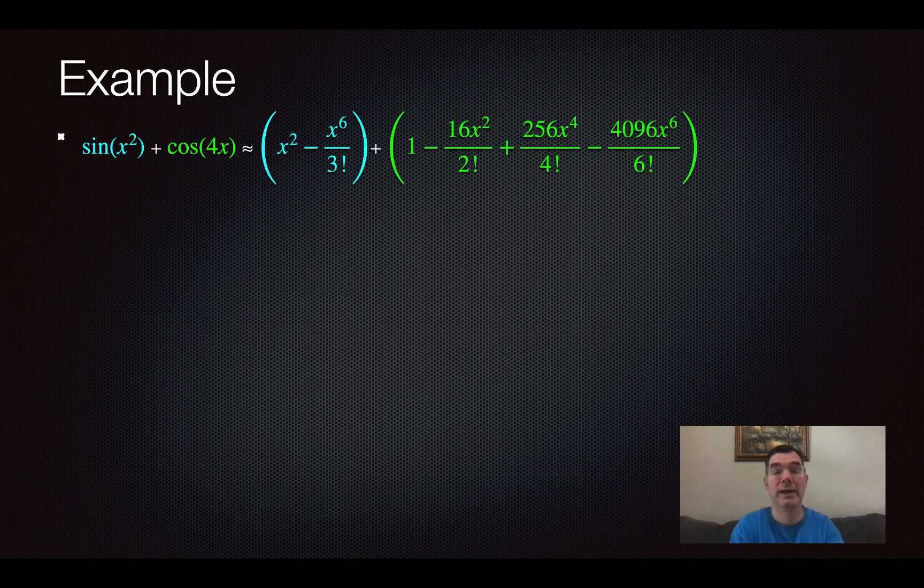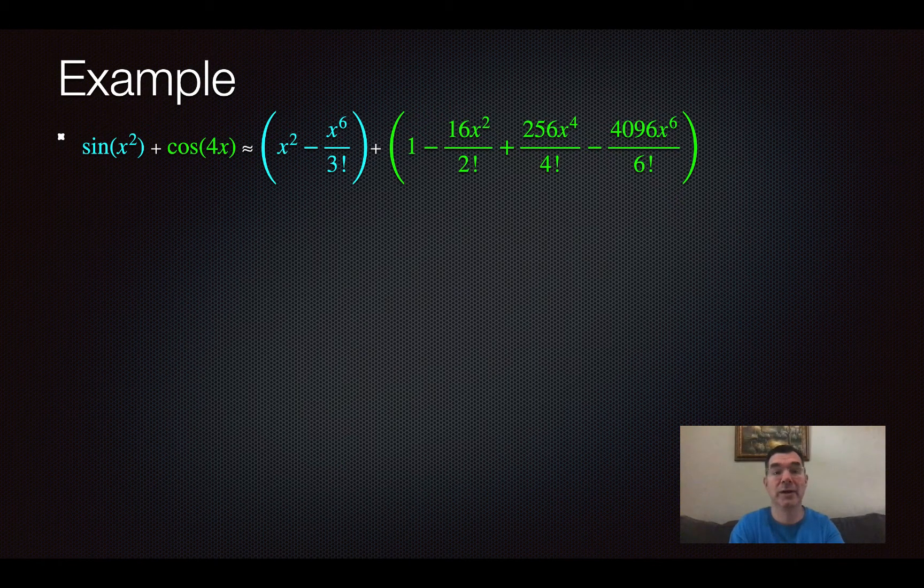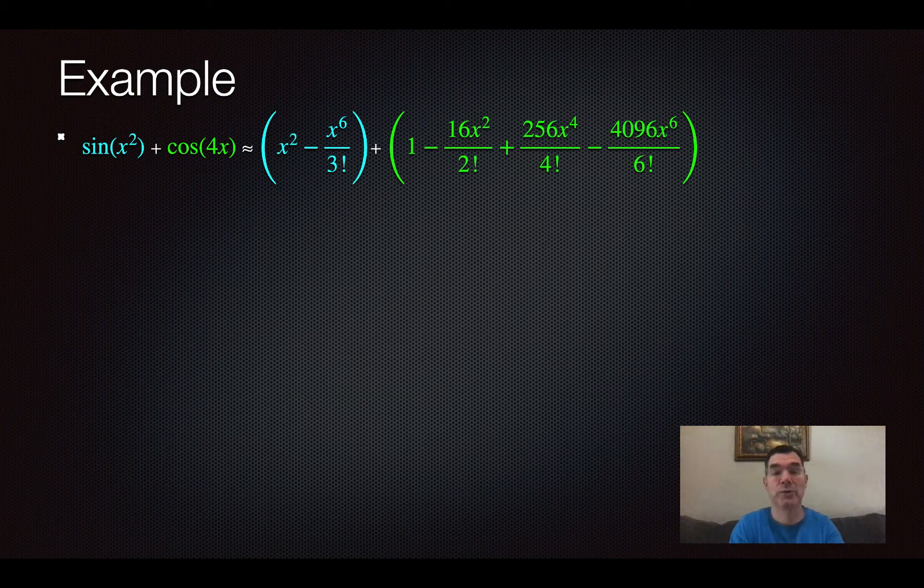So now, if we are adding these together, notice that I am approximating those up to the x to the 6 term and that's where I'm stopping. So that's what it looks like, I just need to simplify it and put things in order of ascending exponents of x.